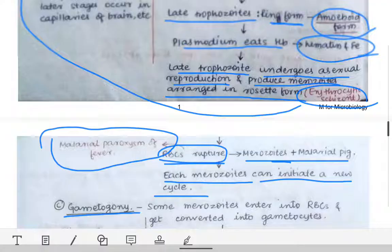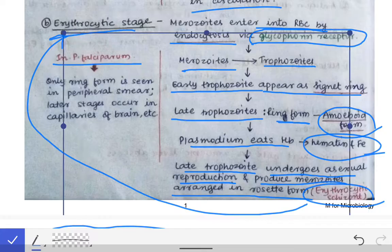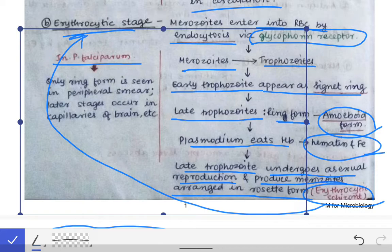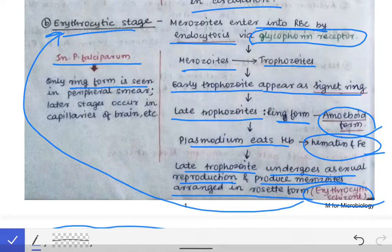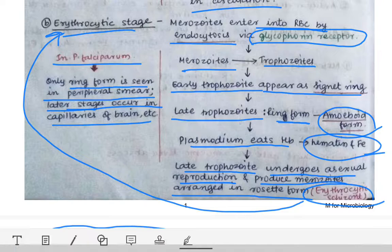An important point before the third stage: in Plasmodium falciparum, only the ring form is seen in the peripheral smear. The later stages occur in the capillaries of the brain, which is why Plasmodium falciparum causes cerebral malaria. Therefore, we cannot see the erythrocytic schizont or the late trophozoites in the peripheral blood — only the ring stage is visible in peripheral blood in falciparum infection.